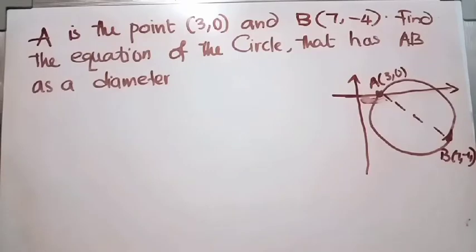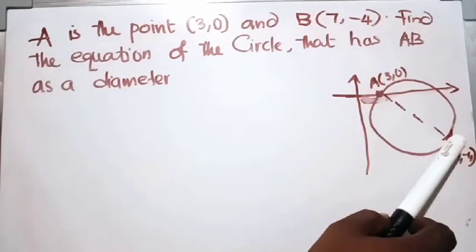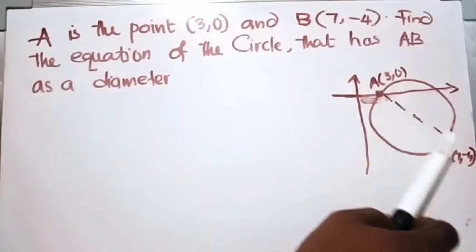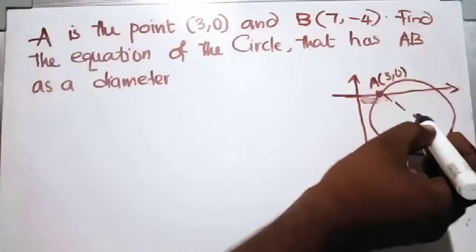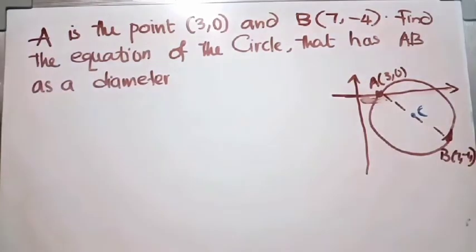So in this question, A is the point (3, 0) and B is (7, minus 4). Find the equation of the circle that has AB as a diameter. A and B are the endpoints of the diameter which passes through the center. We need to find the equation of the circle.